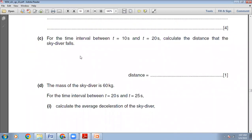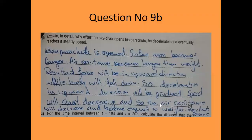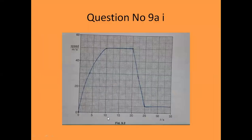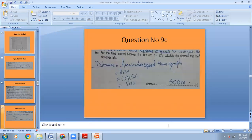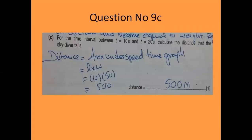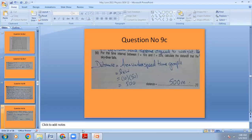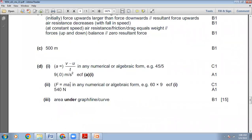Part C: for the time interval between T=10 seconds and T=20 seconds, calculate the distance that the skydiver falls. Distance equals the area under the speed-time graph. From T=10 to T=20, the area under the speed-time graph is a rectangle. Area equals length times width: length is 10 seconds and width is 50 m/s. So 10 multiplied by 50 gives the distance traveled — the answer is 500 meters. The distance traveled is 500 meters. Our answer is right.